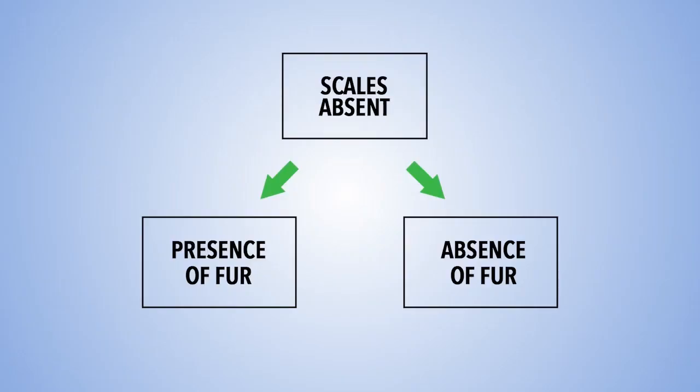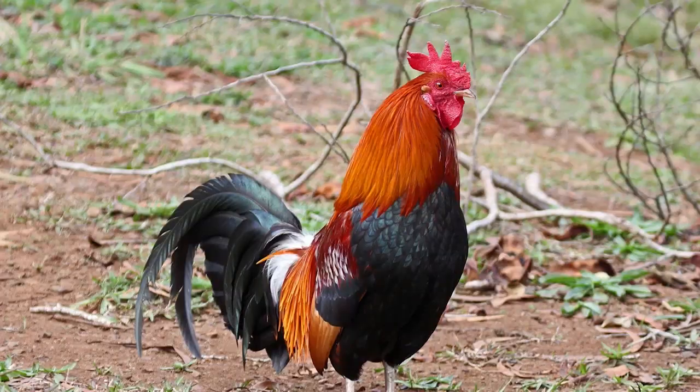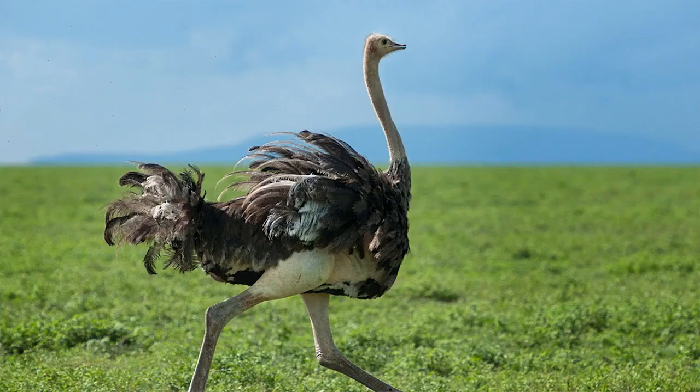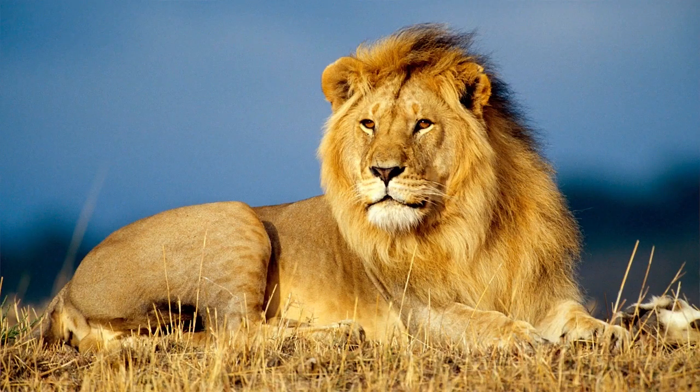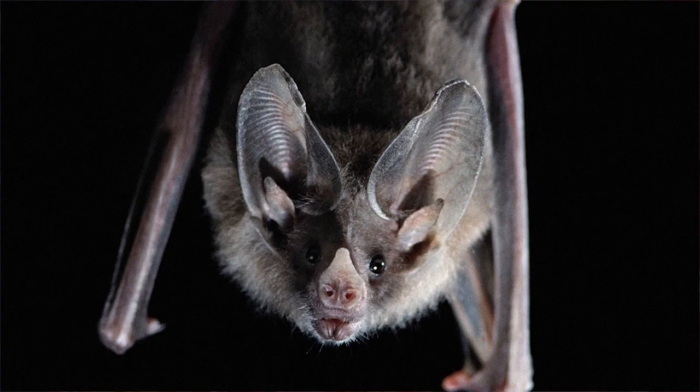Now let's focus on the scales absent group. We can further divide them into absence of fur and presence of fur. For absence of fur, we're talking about the fowl and the ostrich, because they have feathers. For presence of fur, we're talking about the lion and the bat.